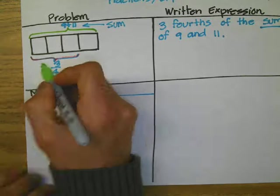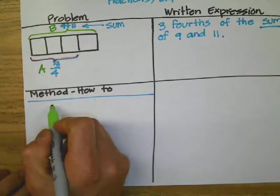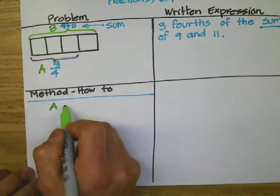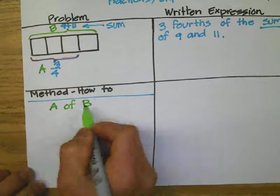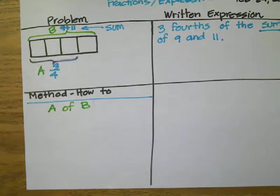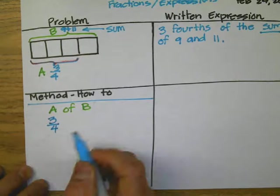So, you will see this. So, A of B. That's what we're doing. We're finding how much is A of B. So, let's write down A.